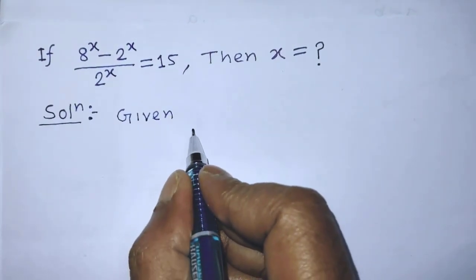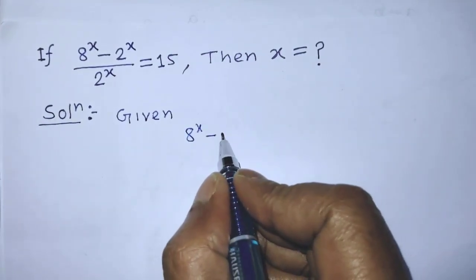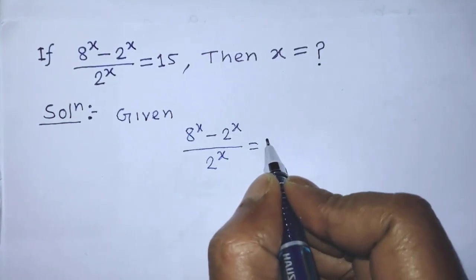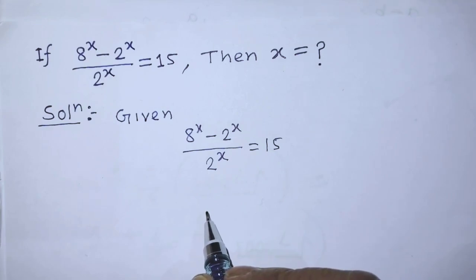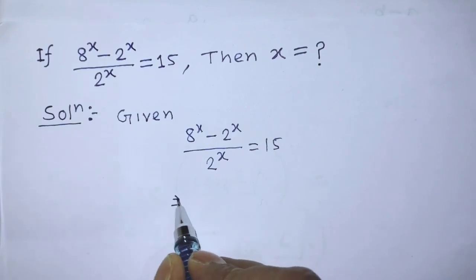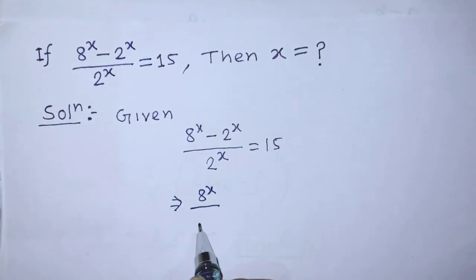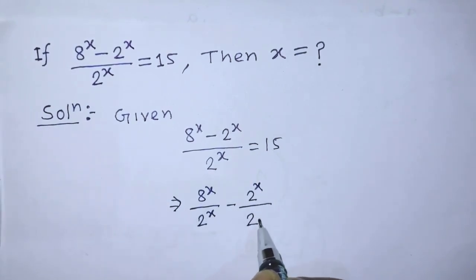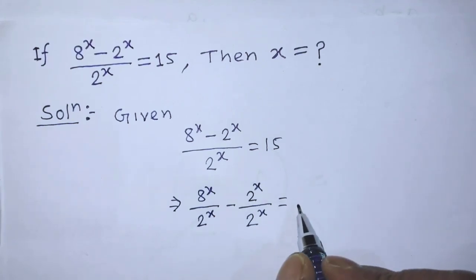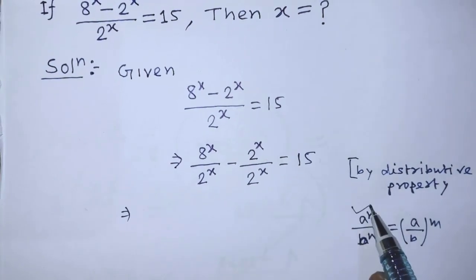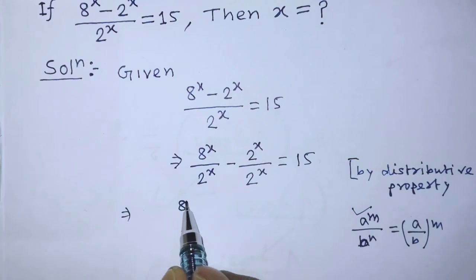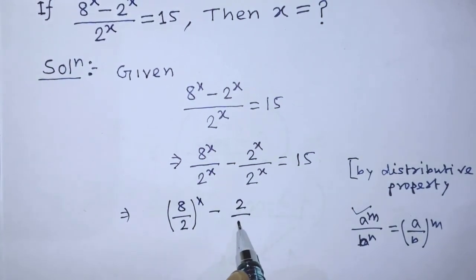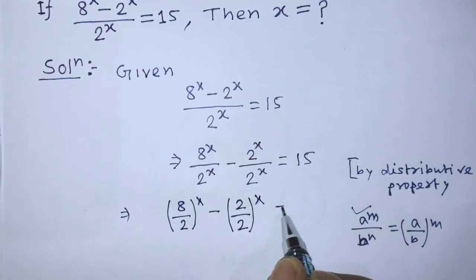Our given equation is 8 to the power x minus 2 to the power x over 2 to the power x is equal to 15. According to the distributive property, we can write on the left hand side: 8 to the power x over 2 to the power x minus 2 to the power x over 2 to the power x is equal to 15. According to this formula, we can write 8 over 2 to the power x minus 2 over 2 to the power x is equal to 15.